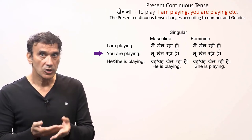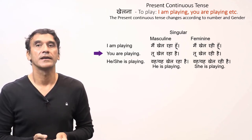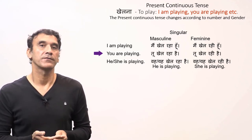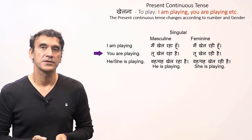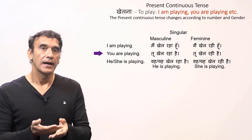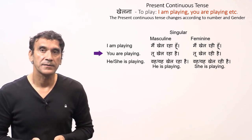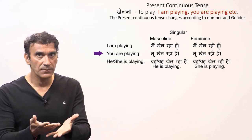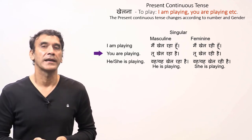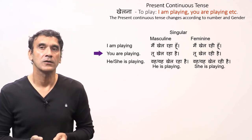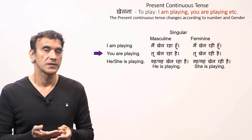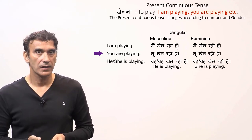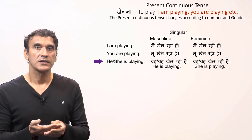For the second person singular: 'tu khel raha hai' — you are playing, for a masculine subject; and 'tu khel rahi hai' — you are playing, for a feminine subject. As mentioned in earlier grammar points, students should avoid this form as it is extremely informal and often sounds rude.